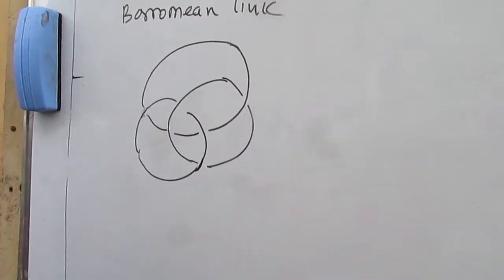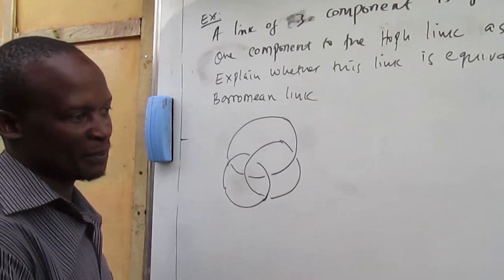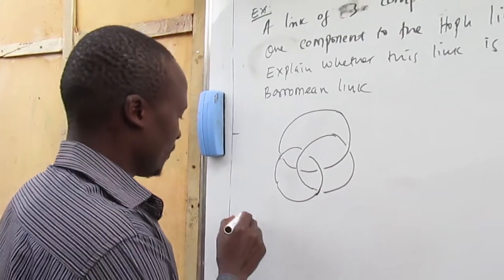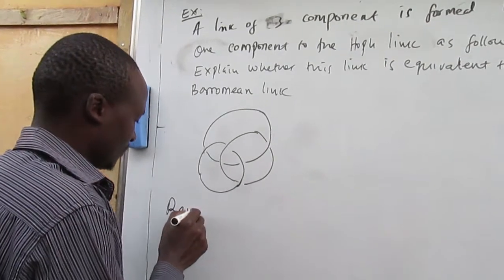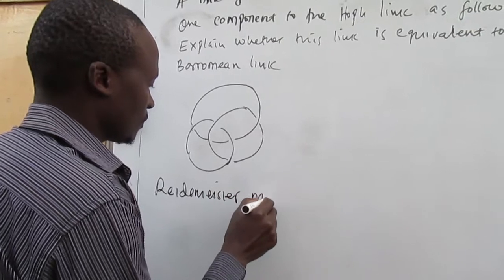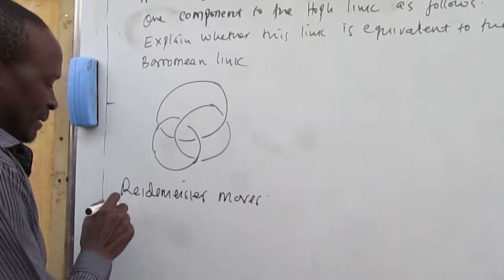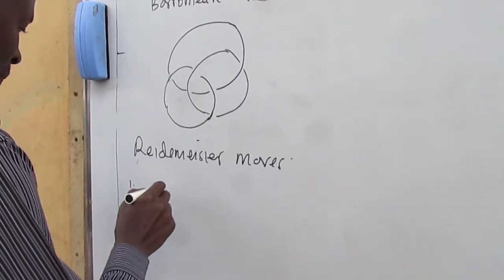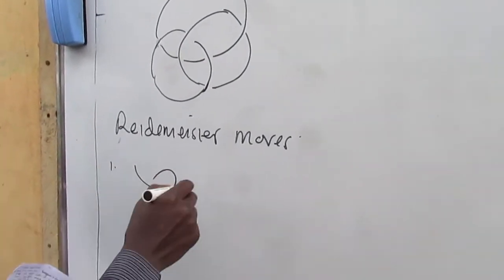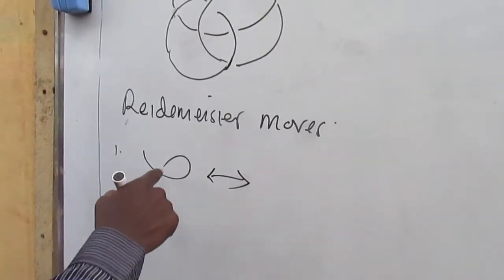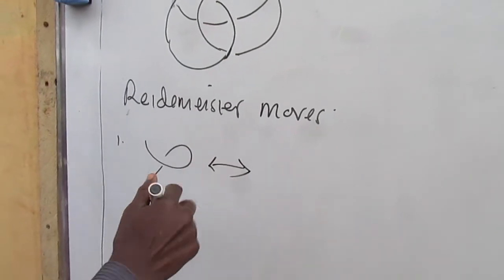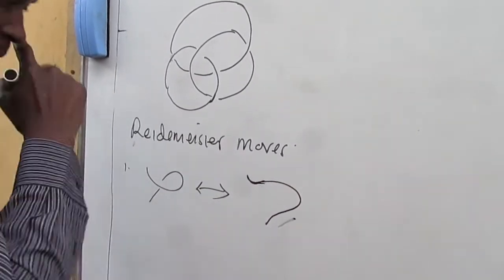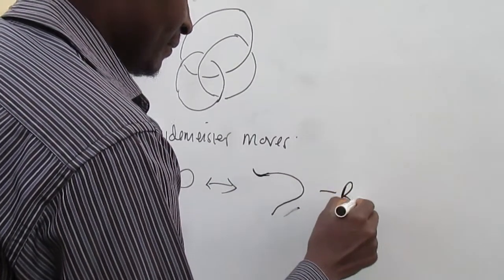Next, let's look at the Reidemeister moves. These are moves which help us with the manipulation of link or knot diagrams, reducing them to simpler knot diagrams. There are three moves named after the mathematician Reidemeister. The first move: if in a knot diagram you have a single loop with a crossing, it is possible to resolve this crossing and completely remove it.